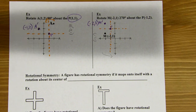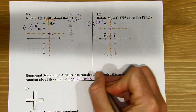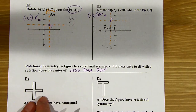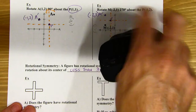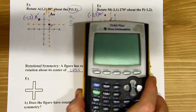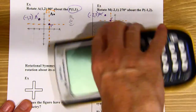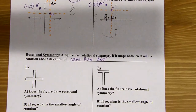Rotational symmetry: a figure has rotational symmetry if it maps onto itself with a rotation about its center of less than 360 degrees. The reason we say less than 360 is that 360 degrees works with anything — like a calculator rotated 360 degrees looks the same, but that's no fun. We want to see if we can get a rotation of less than 360 degrees.